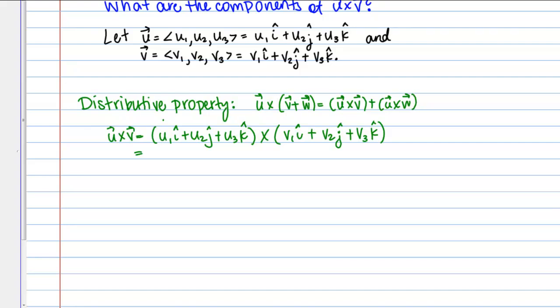My first term here is going to come from multiplying or crossing these two terms, so that's going to be U1 V1 times i cross i, and then so on down the line. If I do all the terms, I'm going to have plus U1 V2 times i cross j, plus U1 V3 times i cross k.